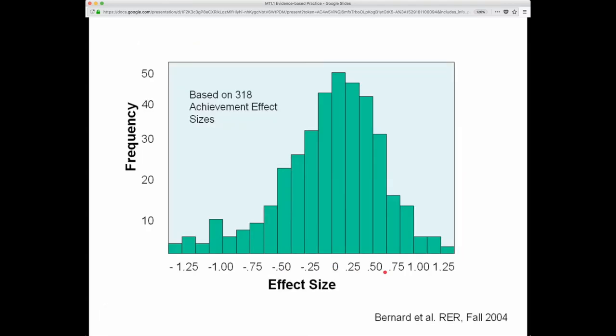So effect sizes are used all over the place to give a sense for how powerful effects are. So here's one graph of 318 studies that reported effect size that shows how variable effect sizes can be. They're often just a little bit above zero, sometimes getting up to 0.25 or 0.5, but rarely getting above one. And sometimes they're negative, but somewhat more often to be positive and small.